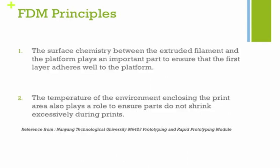In the FDM process there are two key principles or phenomena. First, the surface chemistry between the extruded filament and the platform plays a very important role in ensuring layers adhere well to each other. Since the polymer and platform may be made of different materials, they might not bond well, which is a problem. Second, the temperature of the build environment is also important, as it ensures the part does not shrink excessively — excessive shrinkage can cause layers to not be perfectly flat, causing print defects.